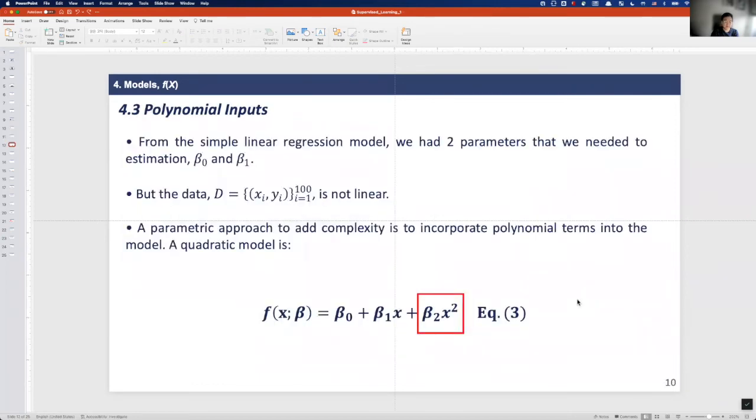As defined by the simple regression model, we only have two parameters that we need to estimate, the beta 0 and beta 1. Thus, the model complexity is minimal. But the data here appears to have a structure that is more complex than linear.